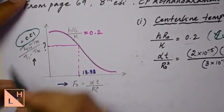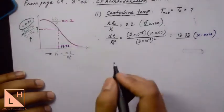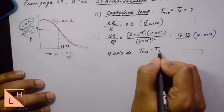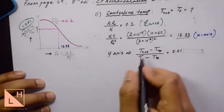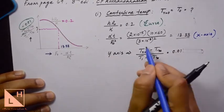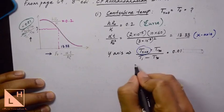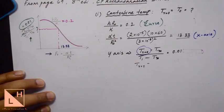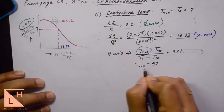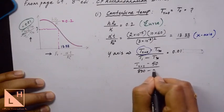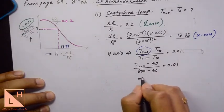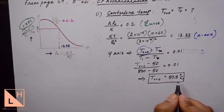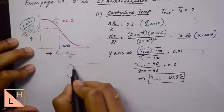Using this y-axis value of 0.01, we substitute all known values into the expression. The only unknown is T at radius 0. With T-infinity known, we get the centerline temperature as 57.5 degrees Celsius.